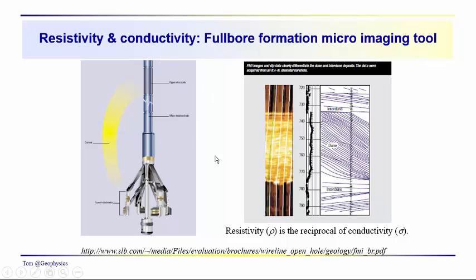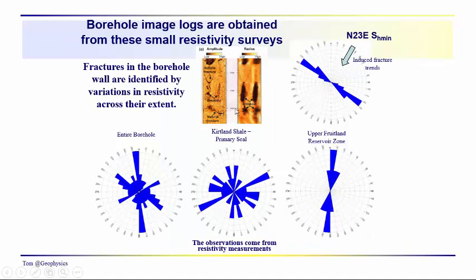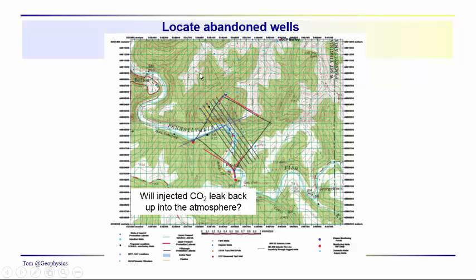Another example involves resistivity, which is the reciprocal of conductivity. This is a borehole instrument that conducts a high-resolution resistivity survey on the borehole wall so we can see fine details of sedimentation — in this case, inter-dune and dune features appearing in the micro-imaging log. We can also see fractures, which are important in a carbon sequestration application. These rose diagrams show their orientation; in this case these are induced fractures, so we know the direction of SH-min and SH-max.